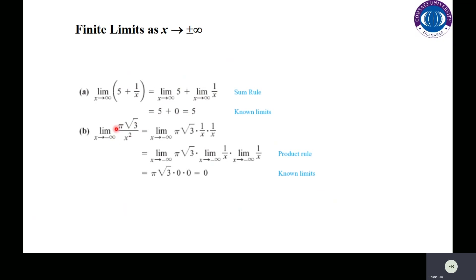For the function 3/x² as x approaches negative infinity: we write 1/x² as (1/x) · (1/x). This is a product of two functions, so we apply the limit to each individually. The limit of 1/x as x approaches negative infinity is 0, so the product gives 0.